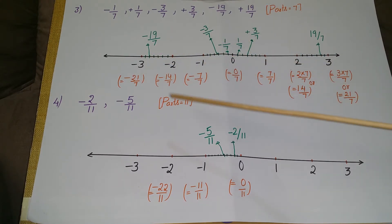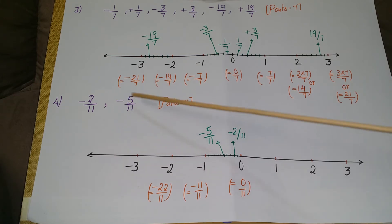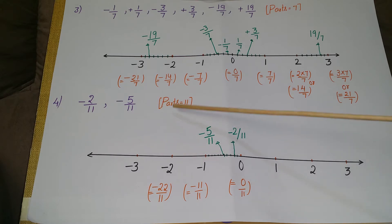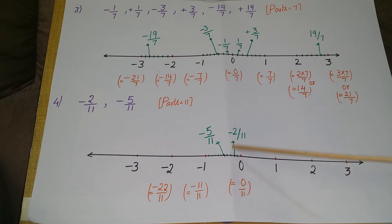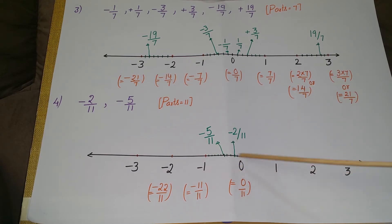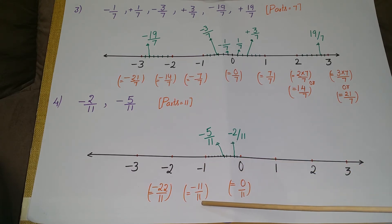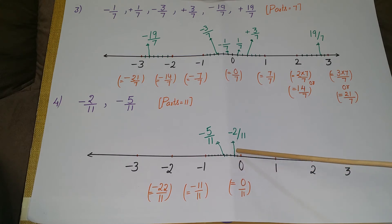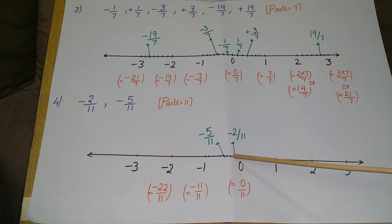Next example: show minus 2/11 and minus 5/11 on the number line. The denominator is 11, so divide each segment into 11 parts. We want positions 2 and 5, which fall between 0 and minus 1. Write 0 as 0/11 and minus 1 as minus 11/11.